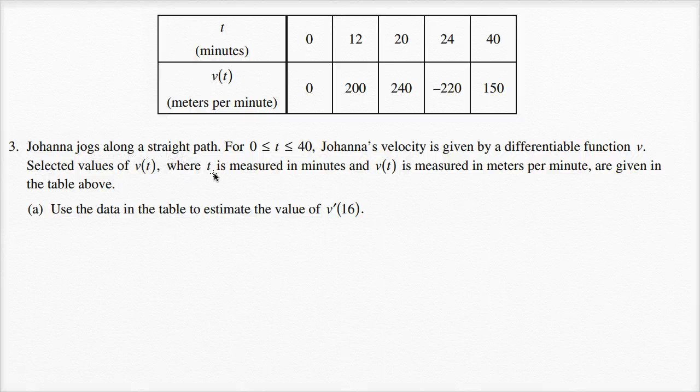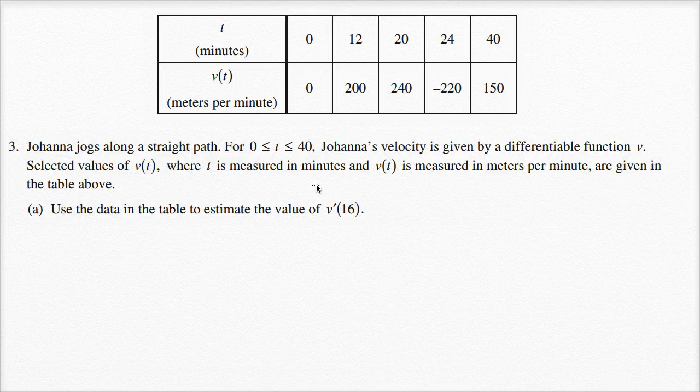Johanna jogs along a straight path. For zero is less than or equal to t is less than or equal to 40, Johanna's velocity is given by a differentiable function v. Selected values of v of t, where t is measured in minutes and v of t is measured in meters per minute, are given in the table above.